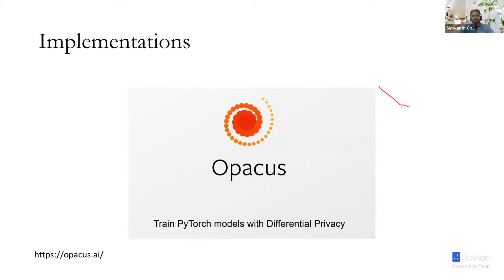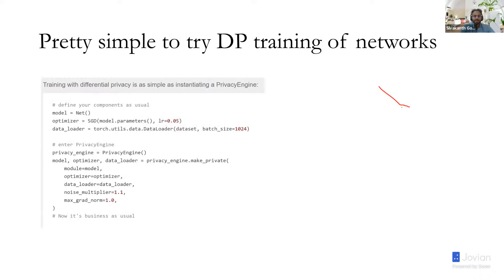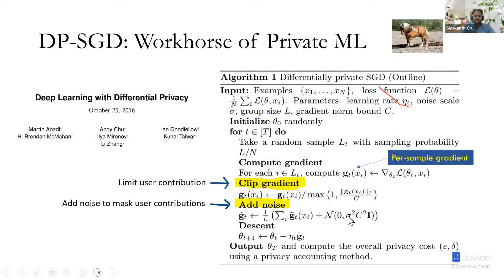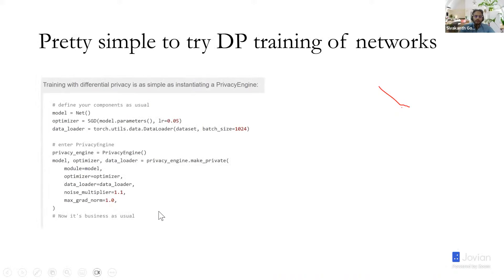There are already implementations of DP-SGD. There is a standard library called Opacus, built on PyTorch, which allows you to train differentially private models. It is pretty simple — just a few lines of code. You load a model, load an optimizer, and provide hyperparameters like the noise sigma and the clipping norm. Once you give these, it outputs the differentially private epsilon your algorithm satisfies, as well as the final trained model.